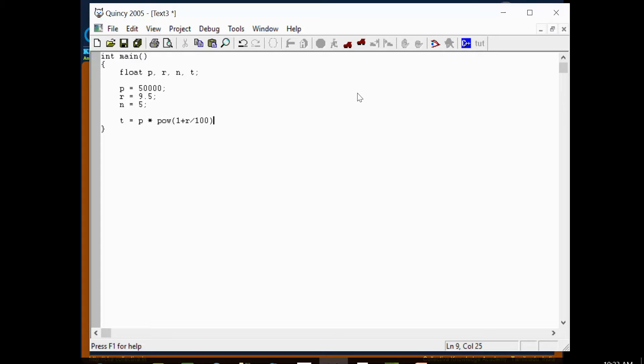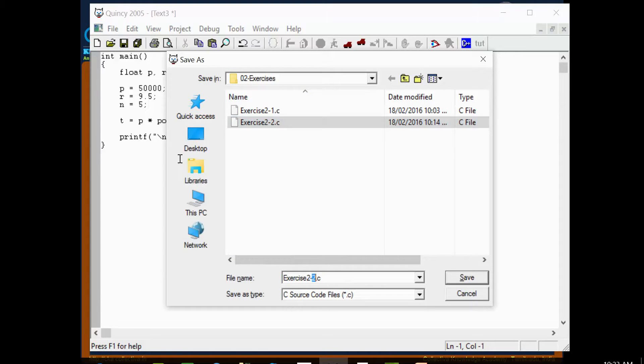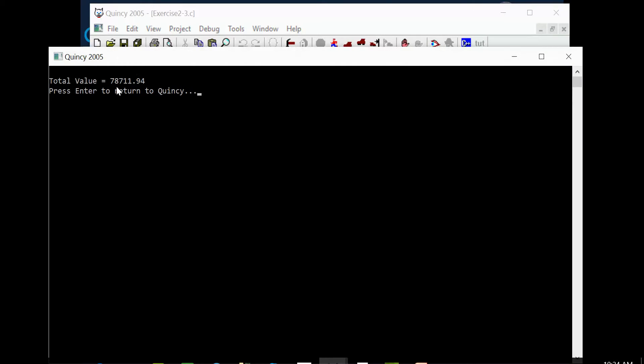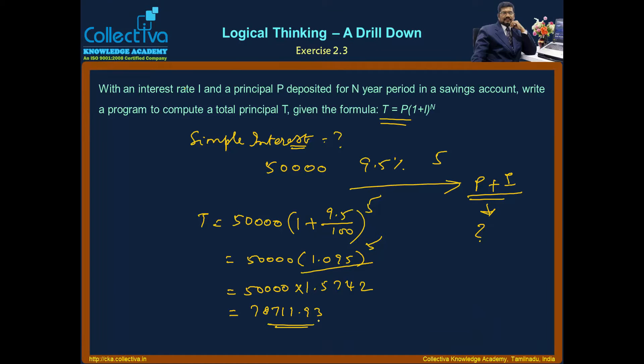Then printf total value equals percentage point 2f. Build and run. So 78,711, this is how we calculate the correct result.